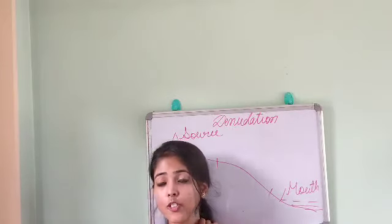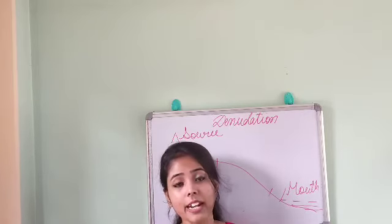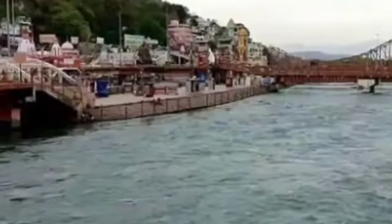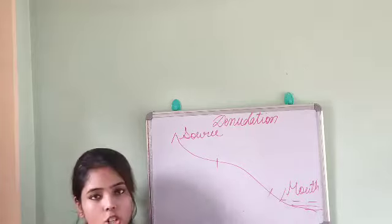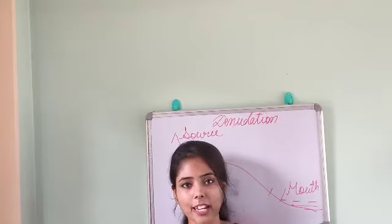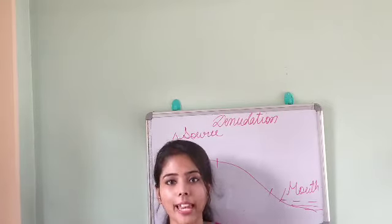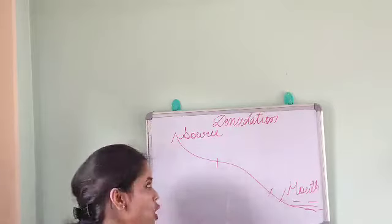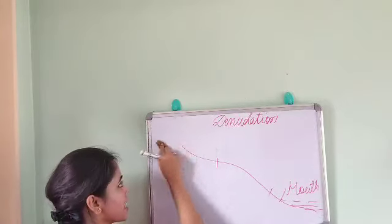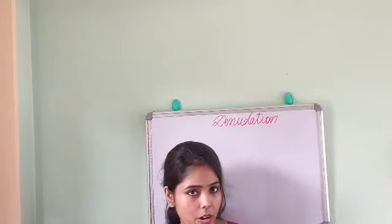This last stage is known as the lower course. A river having all three types of courses is known as an ideal river, and in India the Ganga is the major example of an ideal river. The area through which the river flows is known as the river valley.